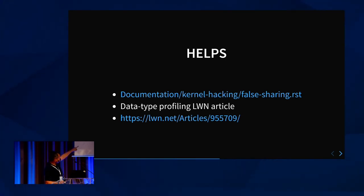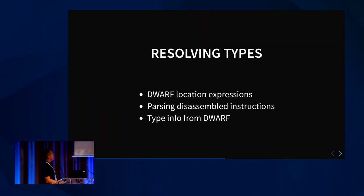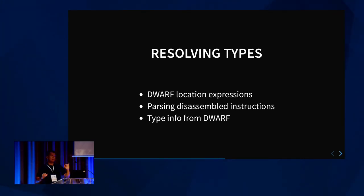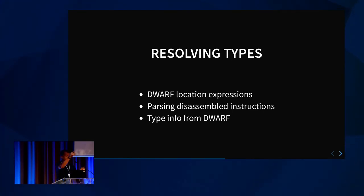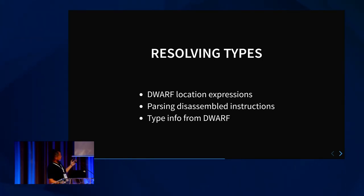But Perf C2C was not resolving types — it was telling you the line number where things happened. The cache line was at that address, and you look at the source code and realize 'oh, that's the data structure.' What's being done now is trying to get information from DWARF and BTF as well. We're doing a disassembly of instructions: you get the IP, go to that function, to that instruction, and parse the instruction.